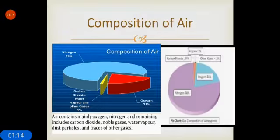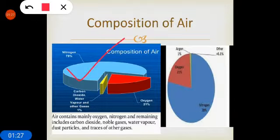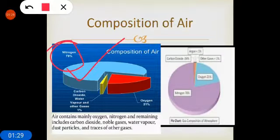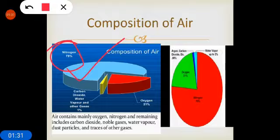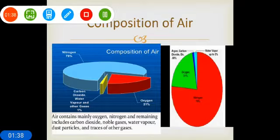Now, composition of air. Air contains mainly oxygen, nitrogen, remaining including carbon dioxide, noble gases, water vapors, dust particles and traces of other gases. Nitrogen is the biggest component constituting 78% of the atmosphere. Oxygen is the second important component forming 21% of the atmosphere and other gases together form only 1% as shown in the figure.